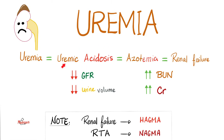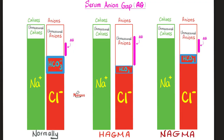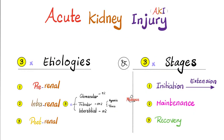In kidney failure there is uremia, uremic acidosis (because many waste products are acidic), and azotemia. GFR is low, urine volume is low, and BUN and creatinine are high in the blood but low in the urine. These accumulated toxins increase unmeasured anions, enlarging the anion gap — this is called high anion gap metabolic acidosis. The most common cause of AKI is pre-renal.